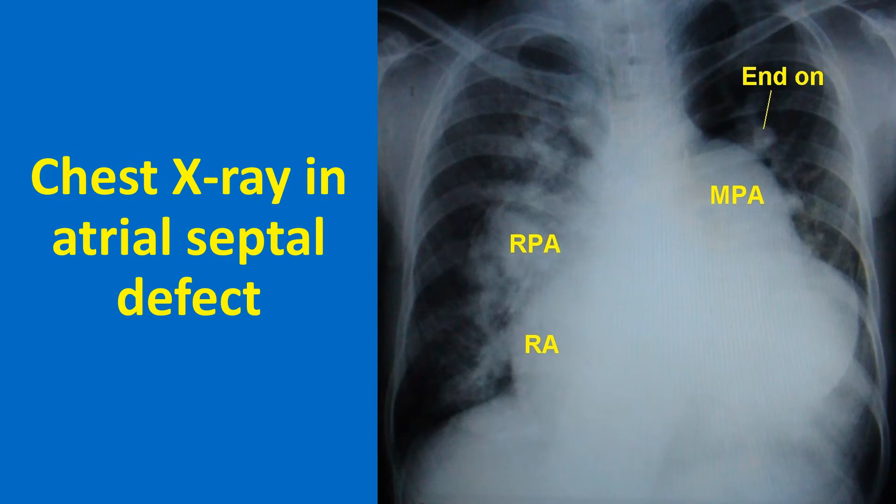This chest X-ray in atrial septal defect shows a grossly dilated main pulmonary artery. The right pulmonary artery is also quite enlarged. Right atrial enlargement is seen as a shift of the cardiac border to the right of the spine. Pulmonary vascularity is increased and prominent endon vessels are seen. The apex is upwards, suggesting a right ventricular configuration.